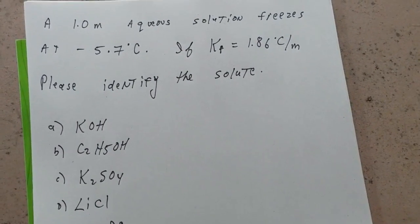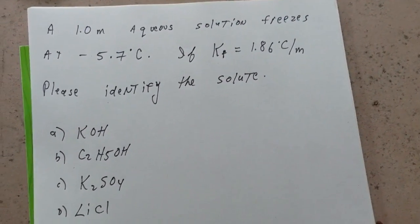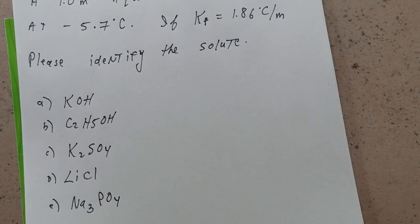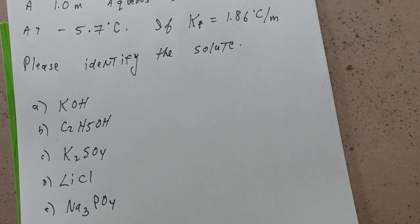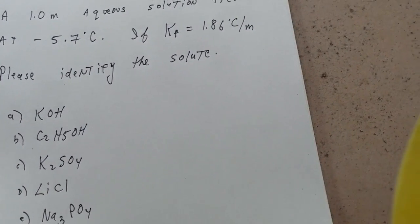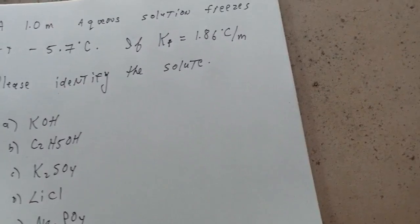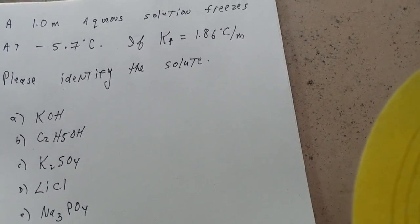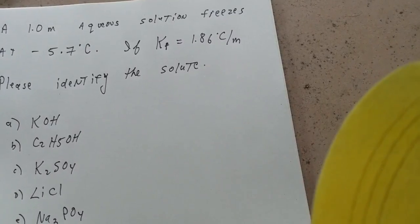And I want to know, identify the solute. Now this is going to test your understanding of colligative properties. If a solute is placed in an aqueous solution, we're going to see four things: an increase in the boiling point, an increase in the osmotic pressure, a decrease in the freezing point, and a decrease in the vapor pressure.